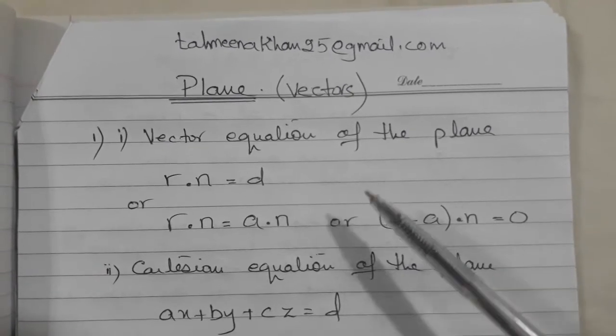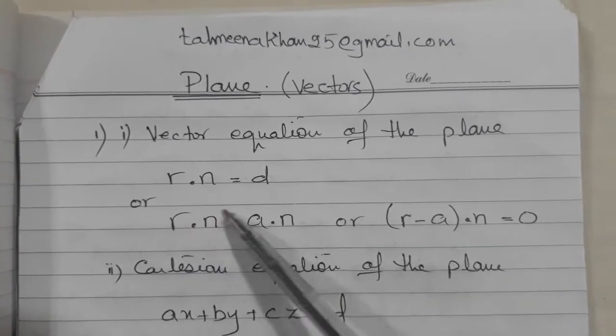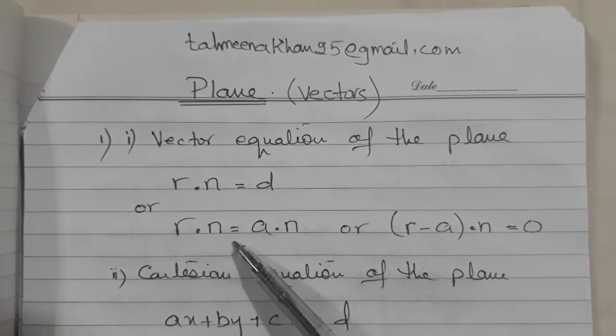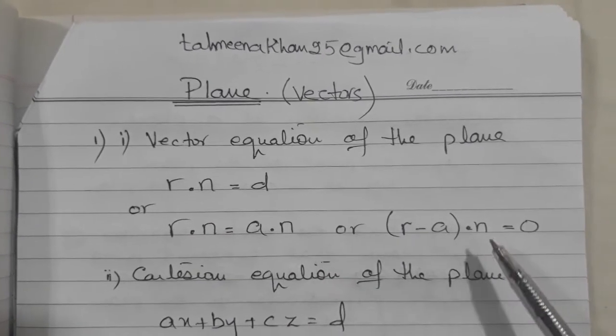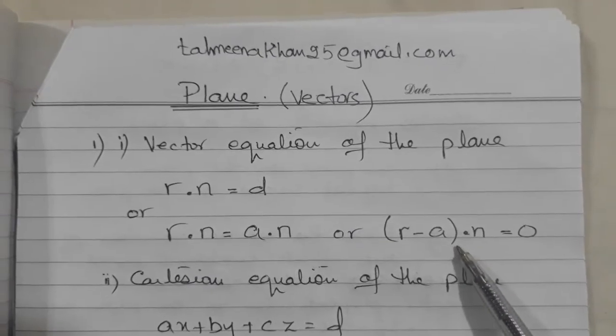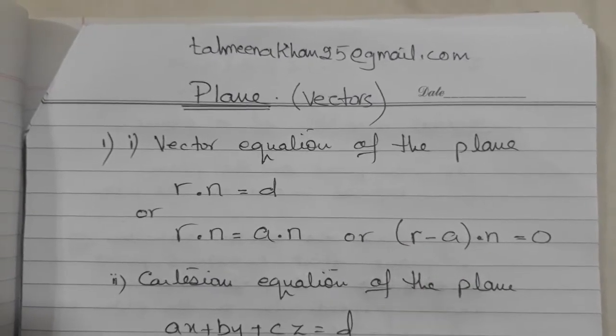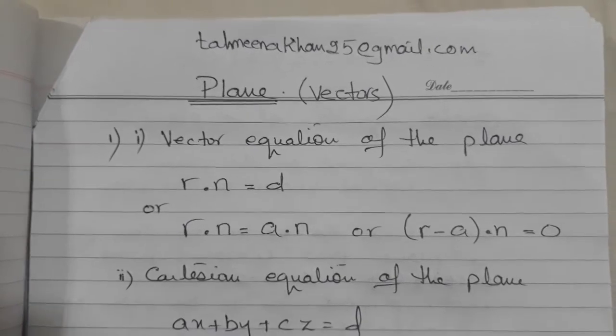Number one, vector equation of the plane which is r dot n equals to d, or r dot n equals to a dot n which can be written as this. We will discuss all this later when we come into the explanation.